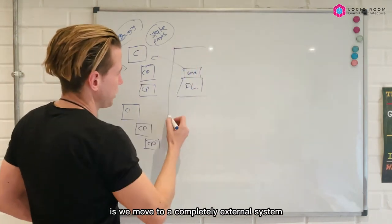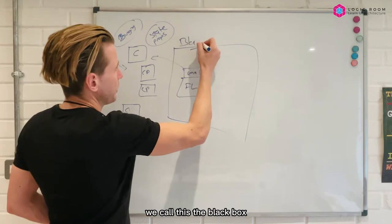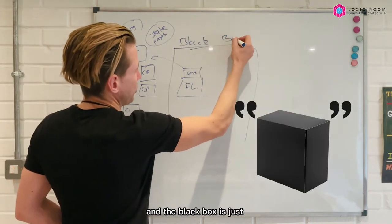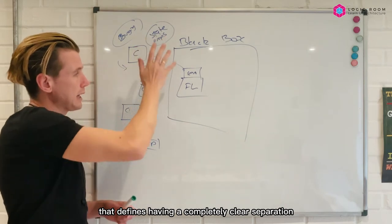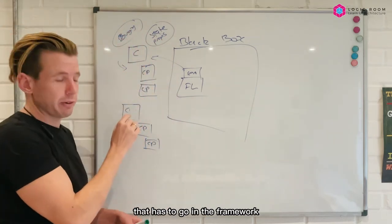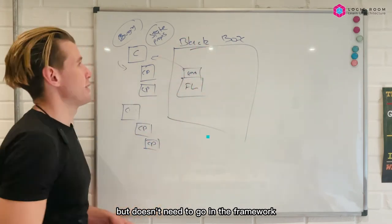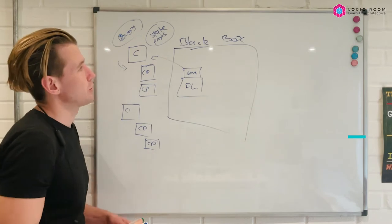And so what we do is we move to a completely external system. At Logic Room we call this the black box, and the black box is just a mental model that defines having a completely clear separation of concerns between stuff that has to go in the framework but doesn't need to go in the framework, which is usually our data and our presentation models.